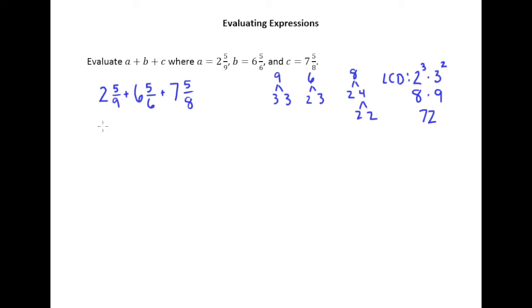Alright, so now we need to figure out what to multiply top and bottom of all these fractions by. We know that 9 times 8 is 72, so I will multiply the top and bottom of this fraction part by 8. So that's going to give me 2 and 40 over 72 for that first mixed number, plus 6.